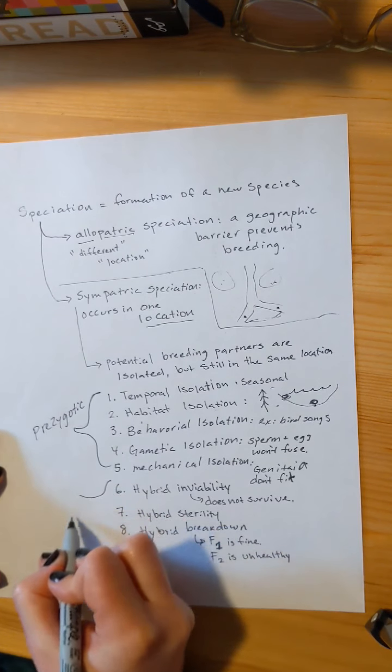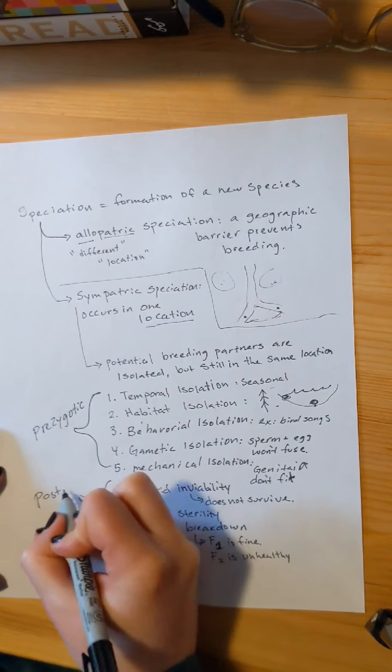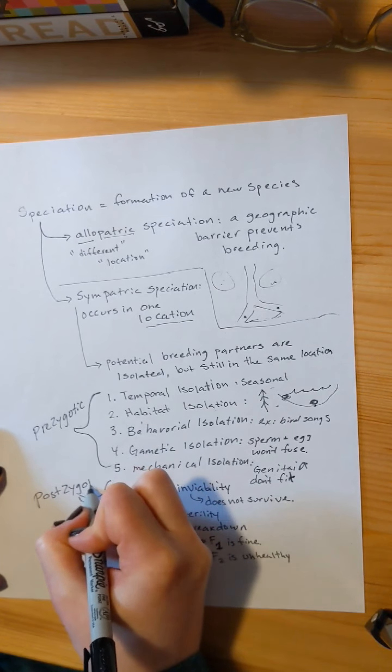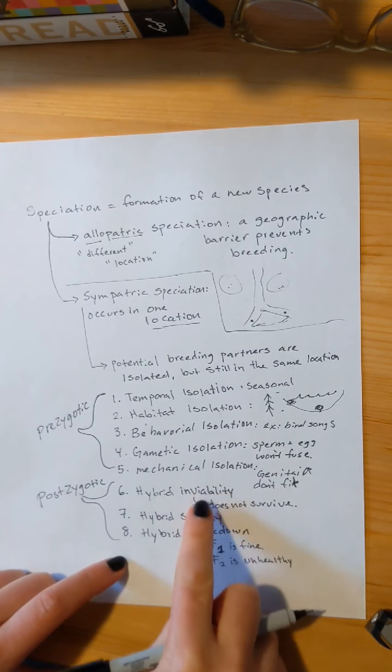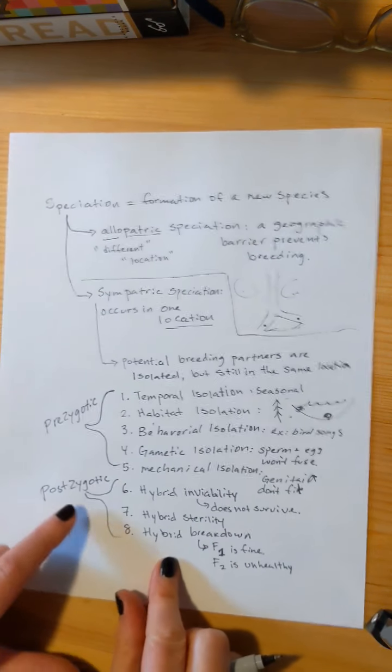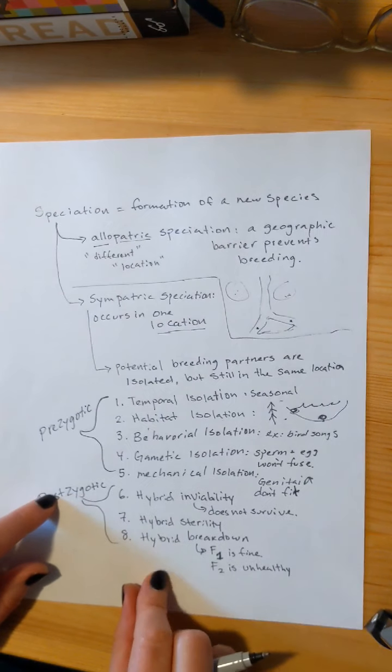These three options are postzygotic. You've made a zygote, except the zygote, for one of these three reasons, cannot continue to reproduce, and thus you will not have a new species created.